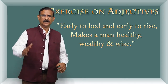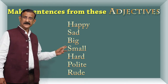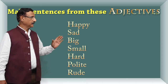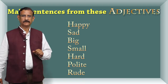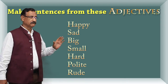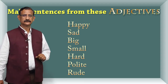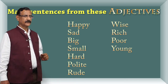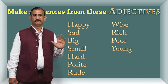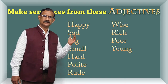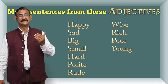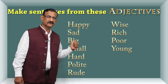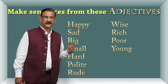Let us take up ten words for you to do it. Happy — ye adjective hai, adjective se aapko banana hai. Happy, sad, big, small, hard, polite, rude, wise, rich, poor, and young. You have to use these adjectives into a sentence, and remember all these adjectives must have a noun with it.